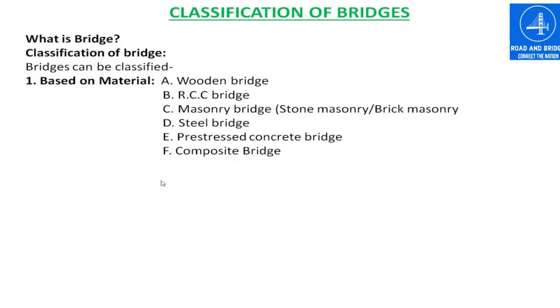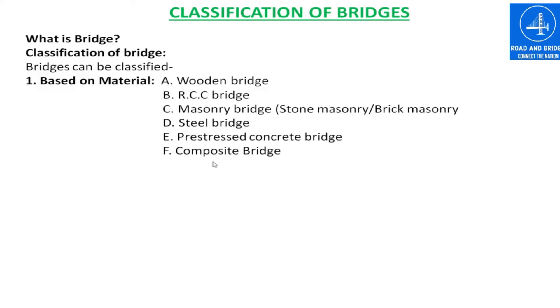Based on materials, bridges can be classified into six categories: wooden bridge, RCC bridge, masonry bridge, steel bridge, PSC bridge, and composite bridge.